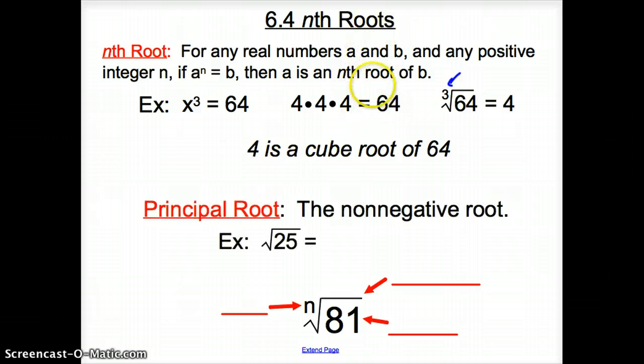Next, we have a principal root. A principal root is a non-negative root. For example, the square root of 25 is positive negative 5, right? Because negative 5 times negative 5 would be positive 25, and positive 5 times positive 5 would be 25. What is a non-negative root? That would be the positive 5. The negative 5 would not be the principal root.